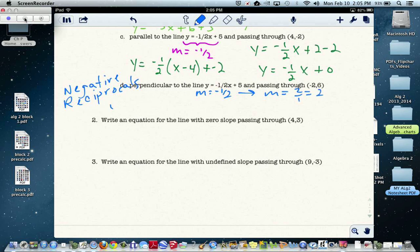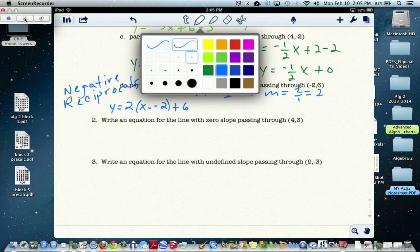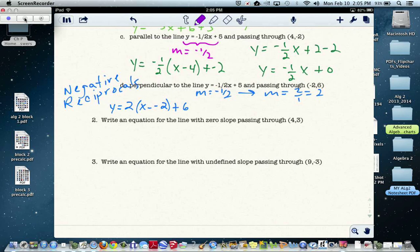So we would write y equals 2, x minus negative 2, plus 6. Now be very careful, because we have lots of negative signs here. So when you distribute the 2, you have 2 times x will give me 2x.